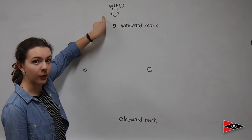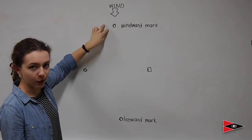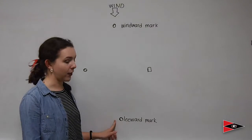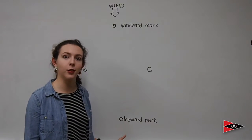So of these two marks, and the way the wind is coming from, this mark is closer to the wind, so we're going to call it the windward mark, and this mark is farther from the wind, so it's called the leeward mark.